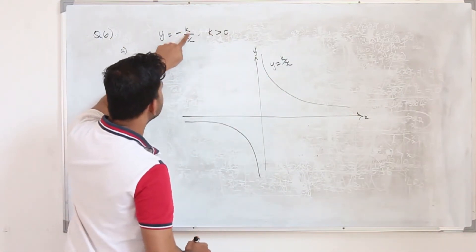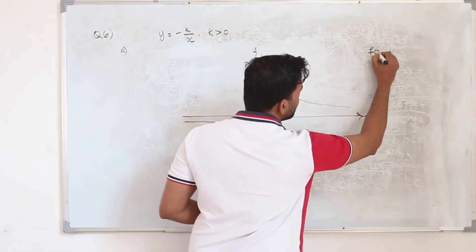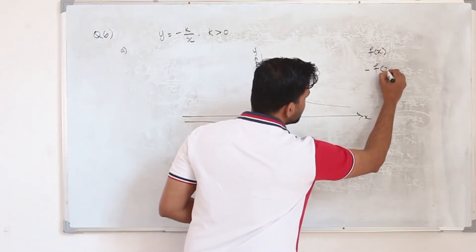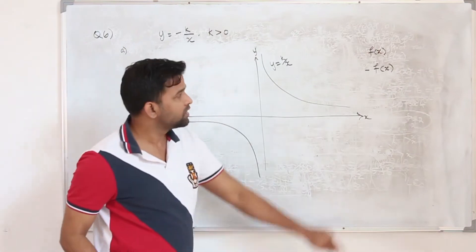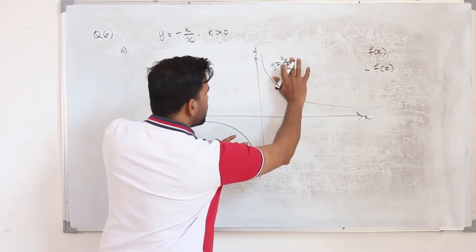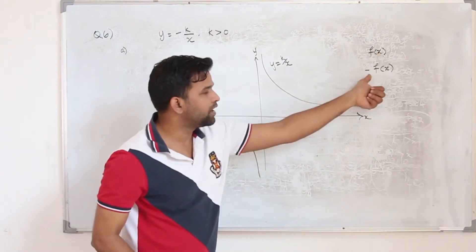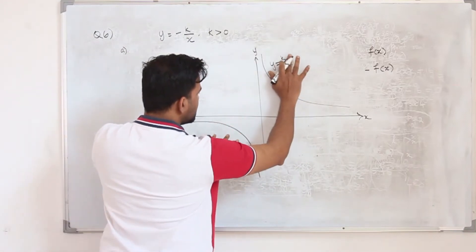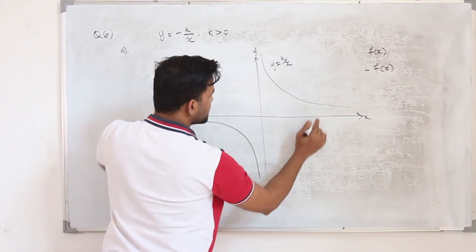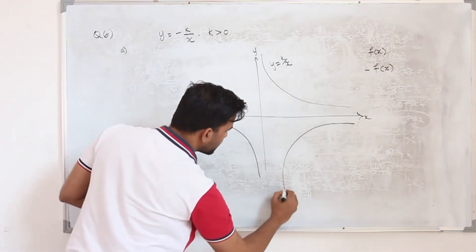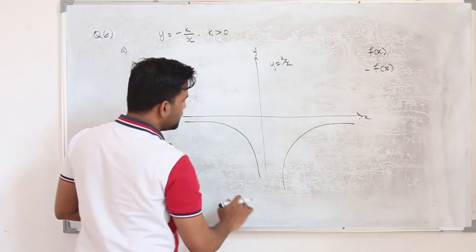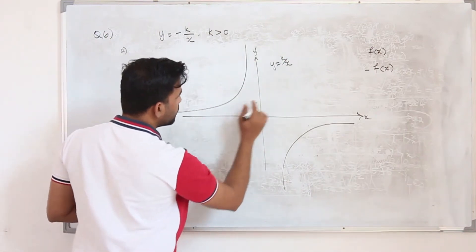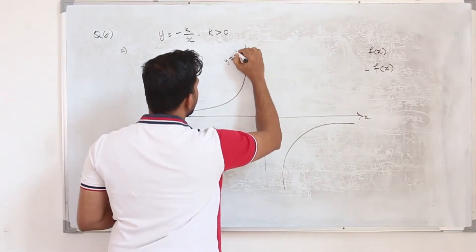Now for minus k upon x: when you have a function f(x) and you want to sketch minus f(x), you take f(x) and flip it over the x-axis. That's your minus f(x). So for minus k upon x, you take k upon x and flip the graph — it's a reflection over the x-axis. So this part comes here and this part goes there.